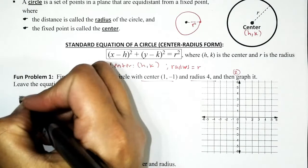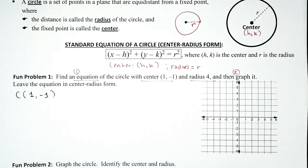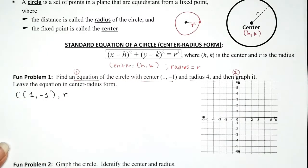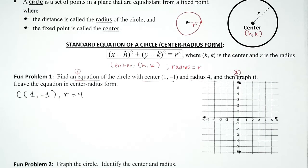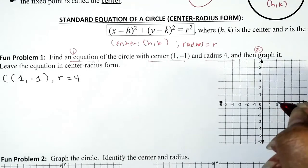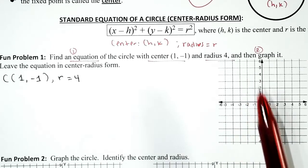The center is (1, -1) — we write center as uppercase C — and the radius is 4. To graph, start by locating the center: from the origin, go one unit to the right and one unit down. To graph a circle, highlight four points that are on the circle — four points that are four units away from the center.